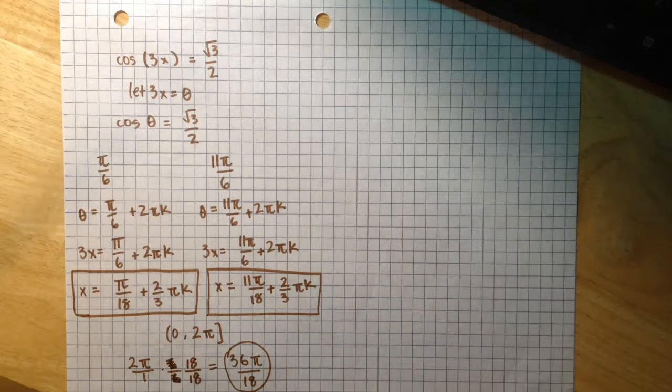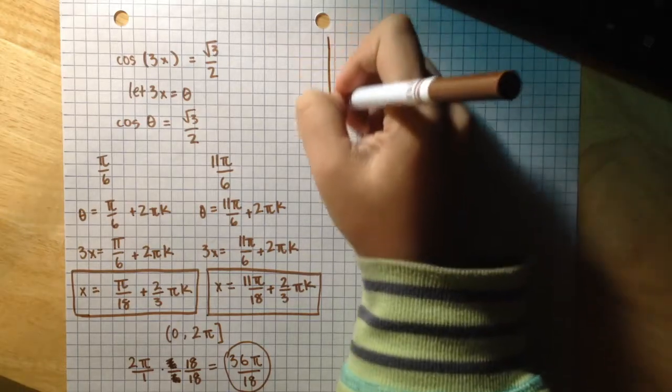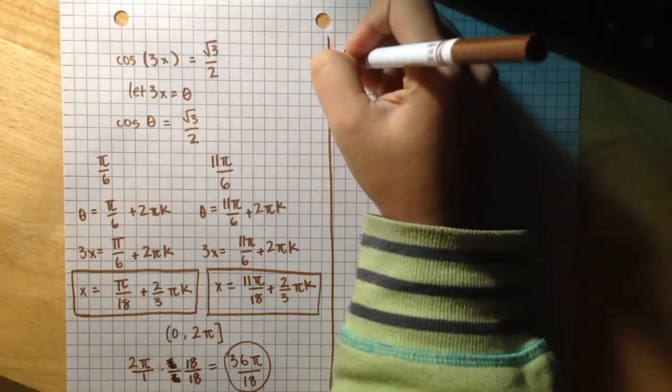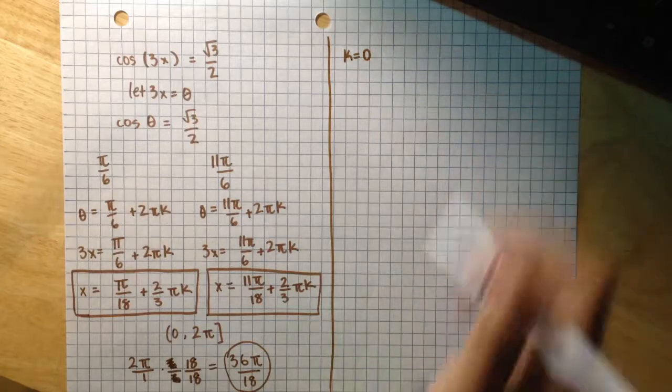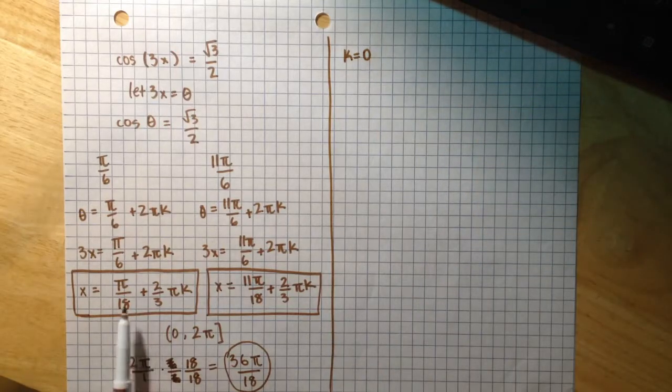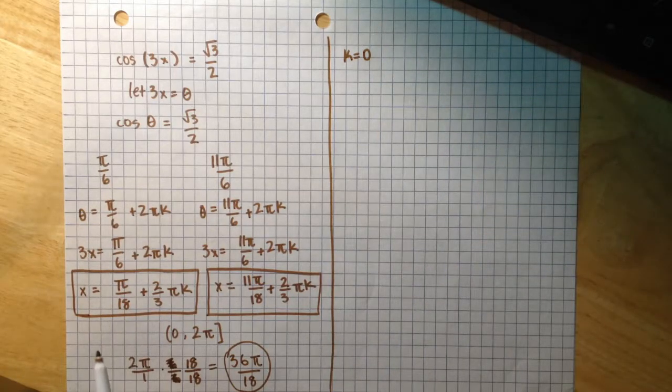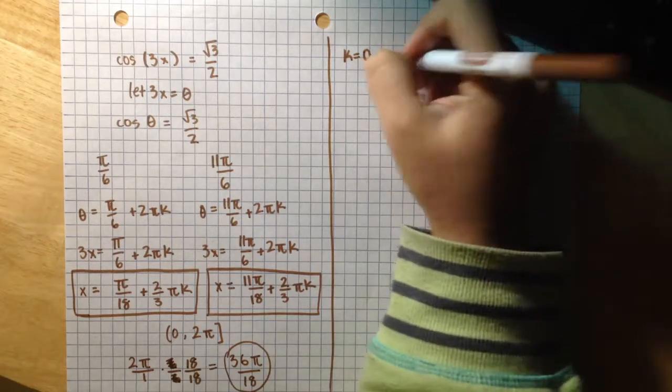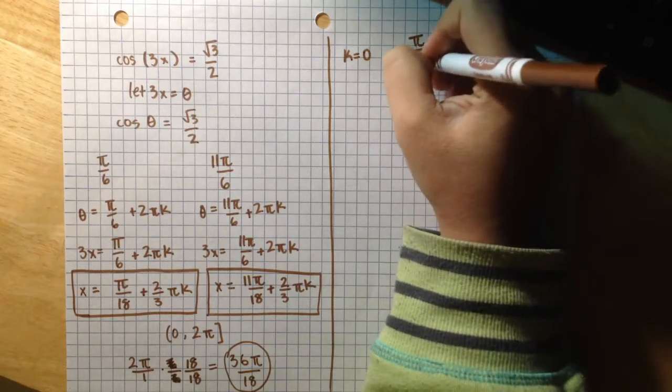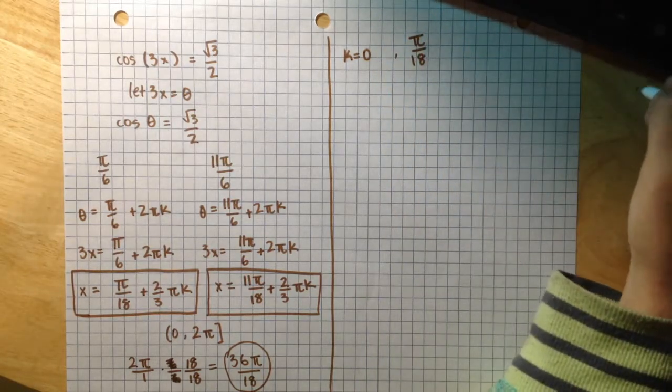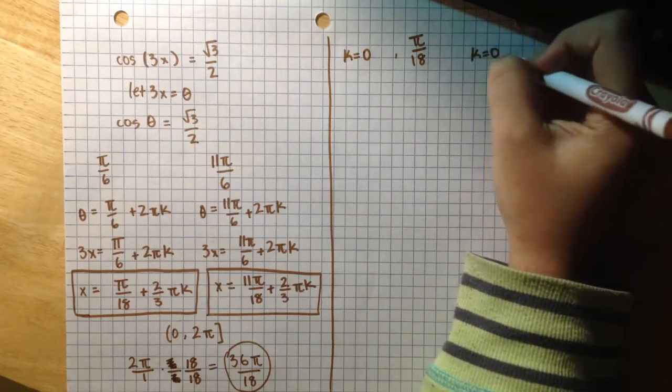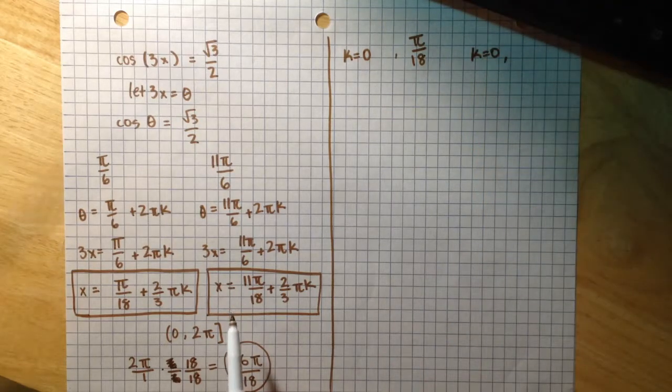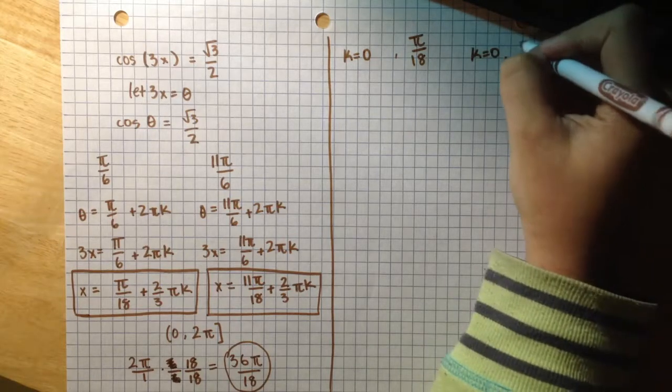So let's start out by k equals 0. So if I substitute k as 0 into this equation, I get π over 18, and if I substitute k as 0 into this equation, I get 11π over 18.